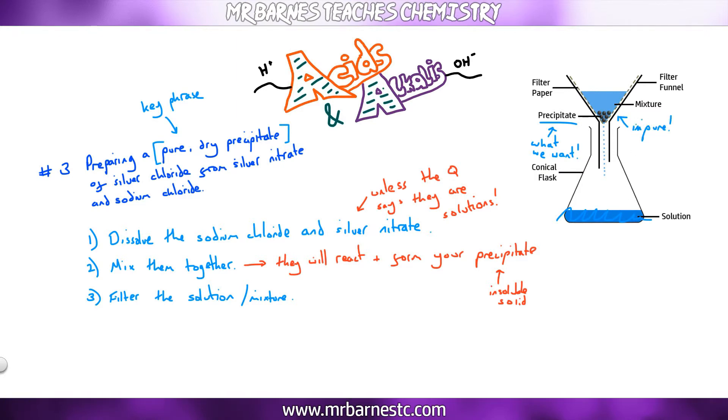Number four, it's going to be impure, your precipitate is. It's going to have some of the remaining solution left with it. If you leave it to dry it will not be a pure dry precipitate. So what you have to do is you have to wash it with distilled water. You give it a rinse, that will remove any impurities—they will go through into the solution below. And then finally number five, you need to leave it to dry. Nice and simple, five key words which might get you five marks out of five in an exam. Dissolve, mix, filter, wash, dry.